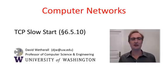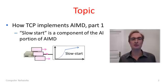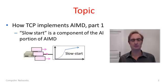G'day viewers. In this segment I'll talk about TCP slow start. Recall that we're trying to get TCP to implement an AIMD control law because this will give us a good allocation that's efficient and fair. Slow start is one of the mechanisms that TCP uses as part of its additive increase mechanism.